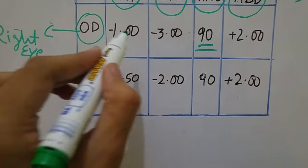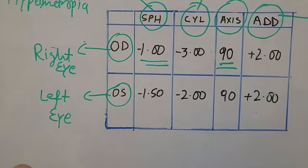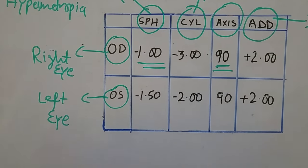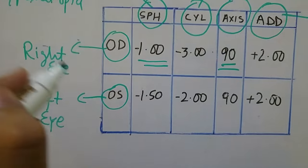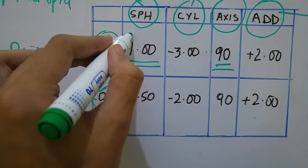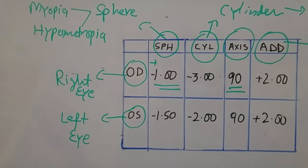Now how to read your number. The figure written under the sphere indicates your spherical error. If you have myopia you will see here the sign will be minus, and if you have hypermetropia the sign will be plus. So the sign can differentiate whether you have myopia or hypermetropia.